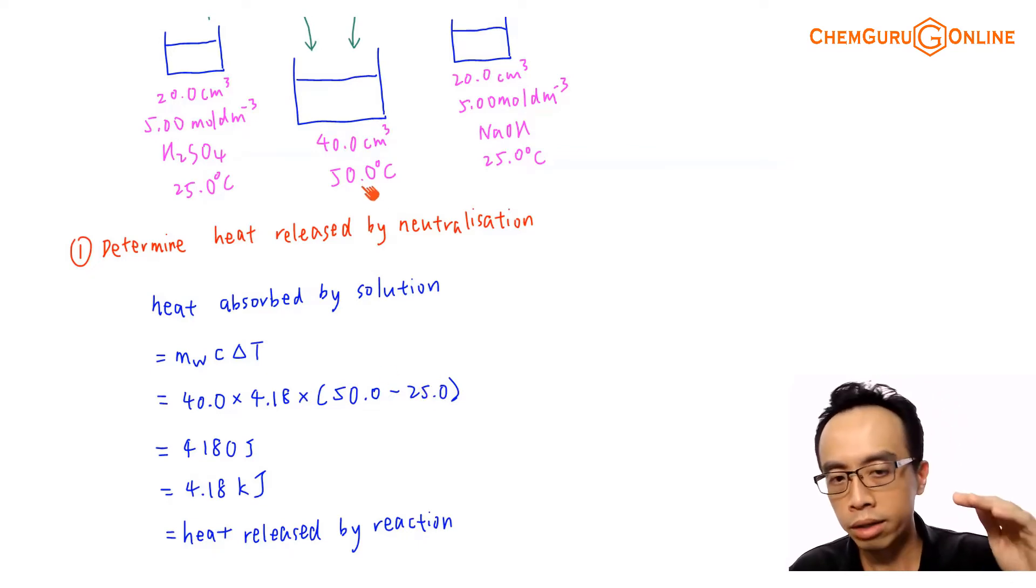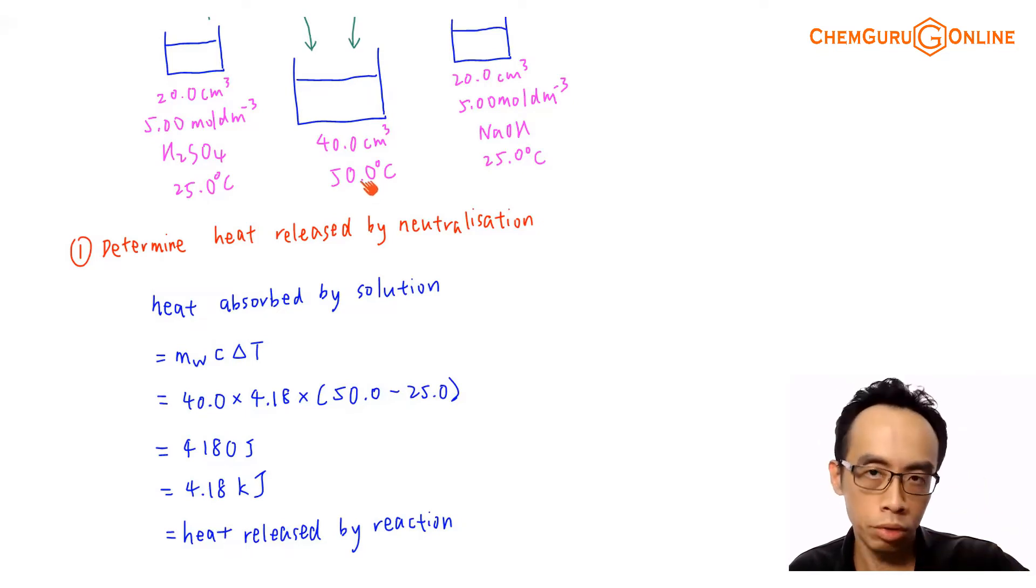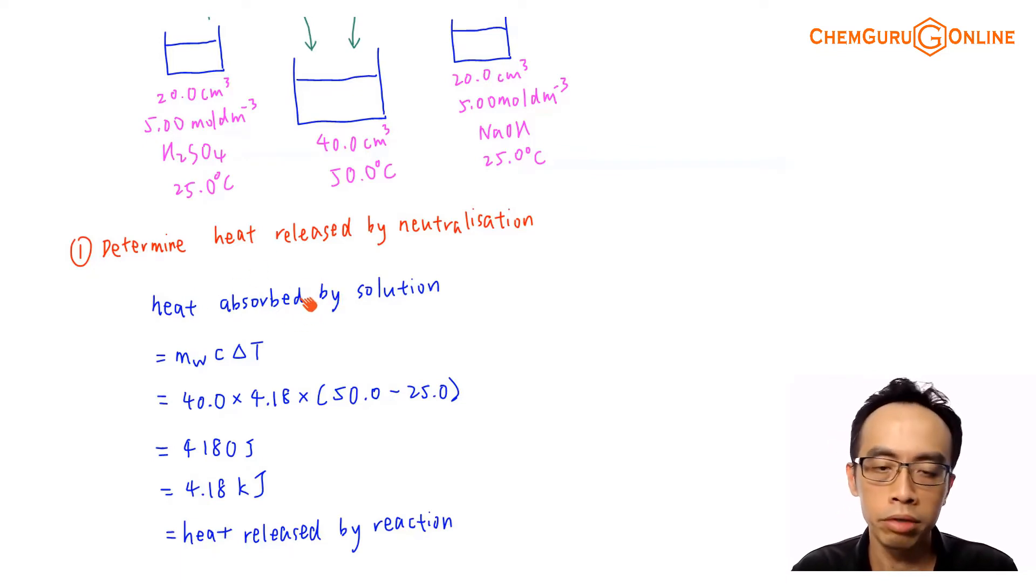Change in temperature will be highest possible temperature, 50.0 degrees Celsius minus the initial temperature, 25.0 degrees C. And I can work this out to be 4180 Joules. Of course, I can convert this to 4.18 kJ. And this heat absorbed by the solution comes from the heat released by the reaction. Again, usually we assume there's no heat loss to surrounding unless it is being mentioned by the question. So heat released by neutralization will be 4.18 kJ.